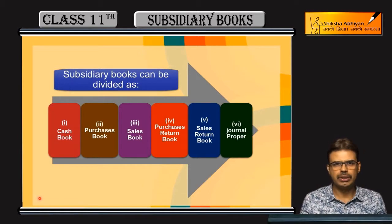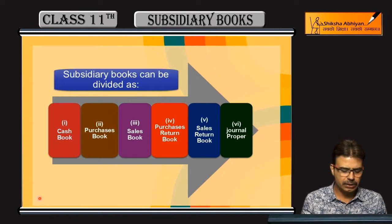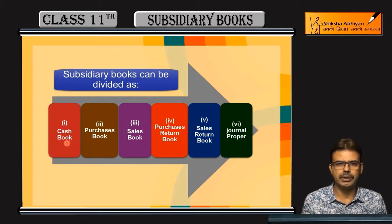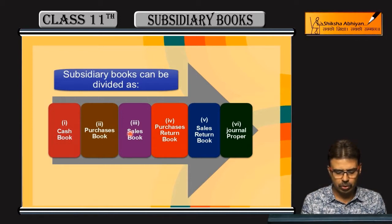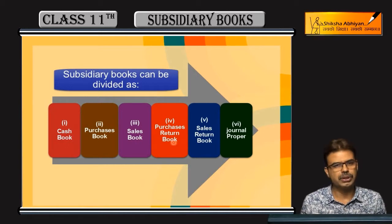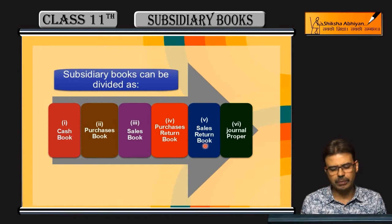If you look at transactions: cash transactions go in the cash book; credit purchases of goods go in the purchase book; credit sales of goods go in the sales book; purchase returns go in the purchase return book; and sales returns go in the sales return book.